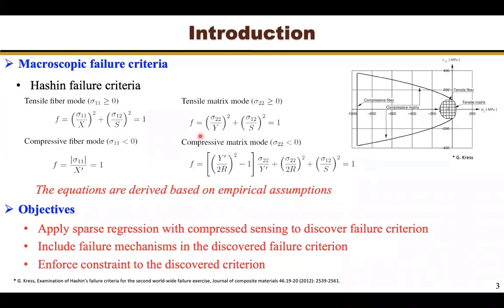Although remarkable success has been achieved using Hashin's failure criterion, it does not always fit experimental results very well. For example, Hashin failure criterion cannot accurately describe the compressive fiber failure mode of composites, as it uses a vertical line to represent the failure envelope, as shown in this picture.